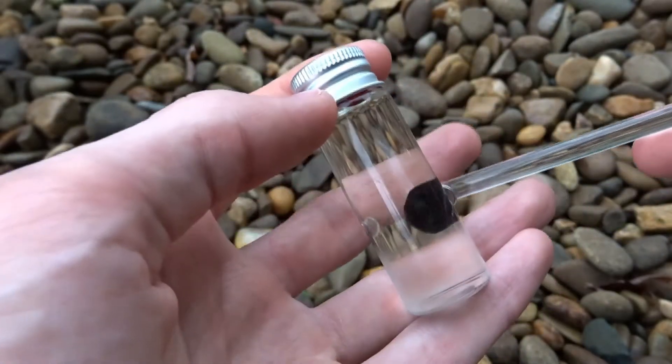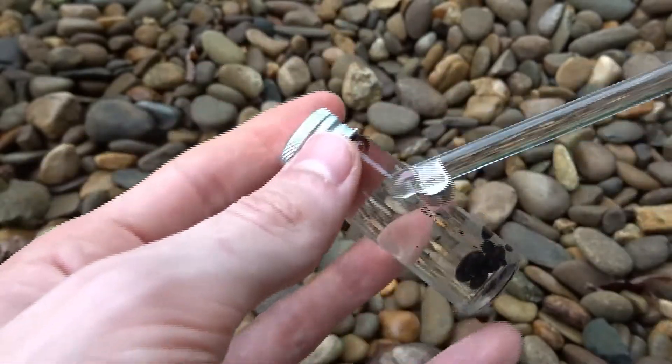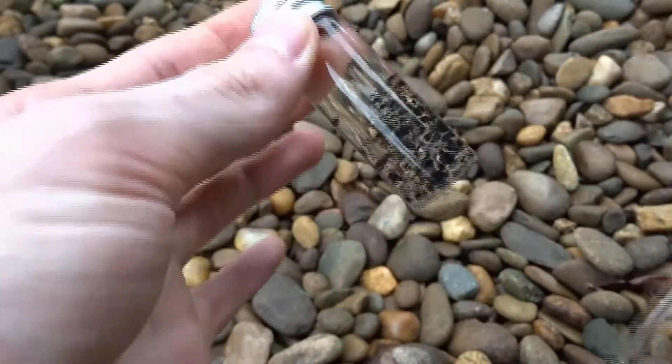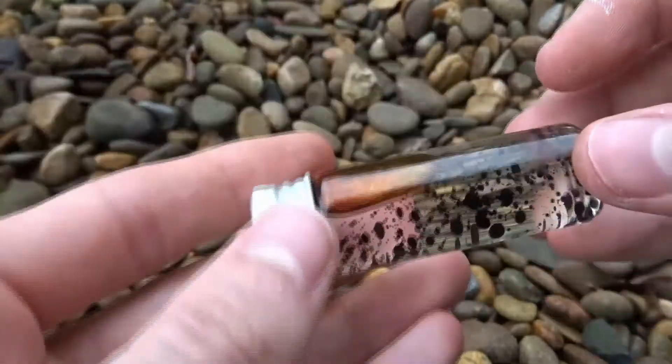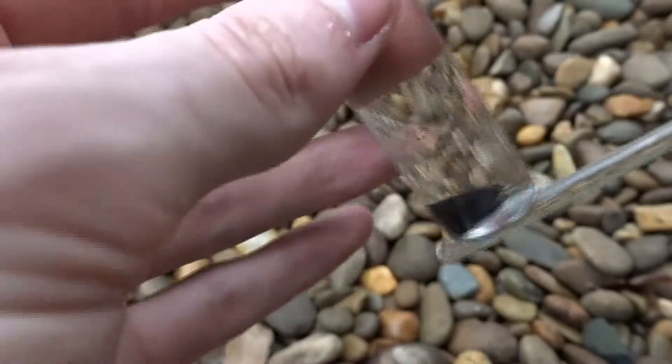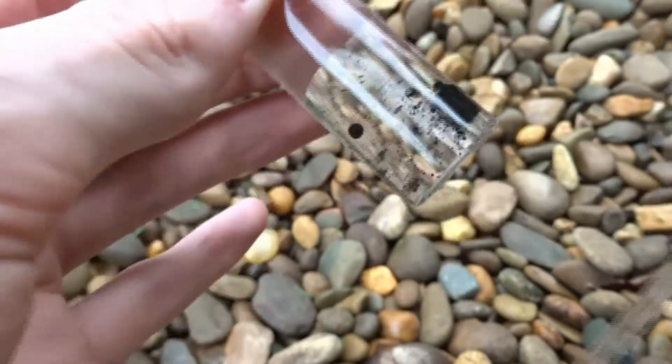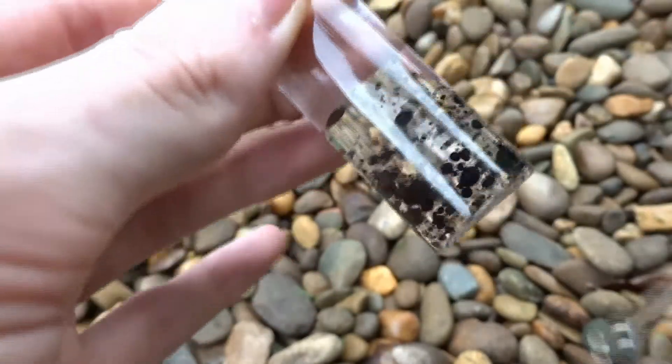At its core, ferrofluid is a liquid that becomes magnetized in the presence of a magnetic field. I'll go into some detail later on in this video, but that's the general idea. That's how these little displays work. Their ferrofluid is suspended in some clear liquid, and a magnet is used to move it around from the outside of the glass container.